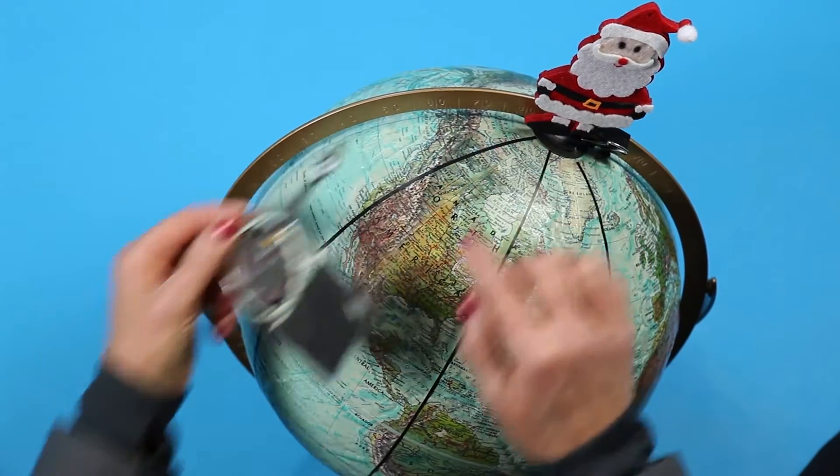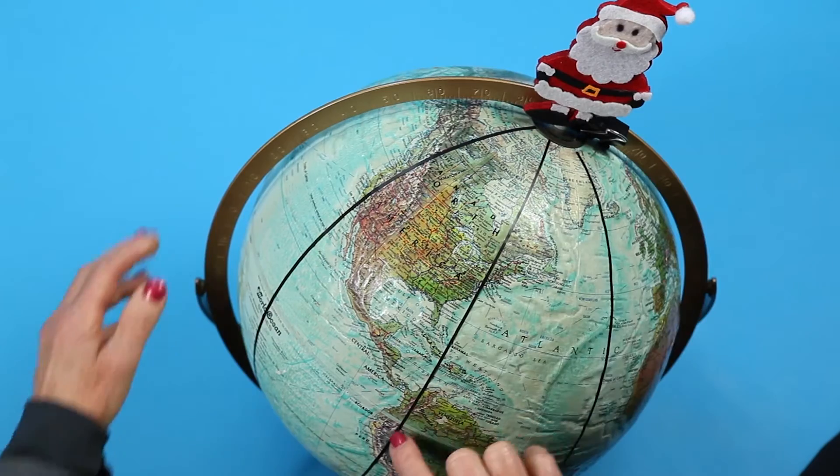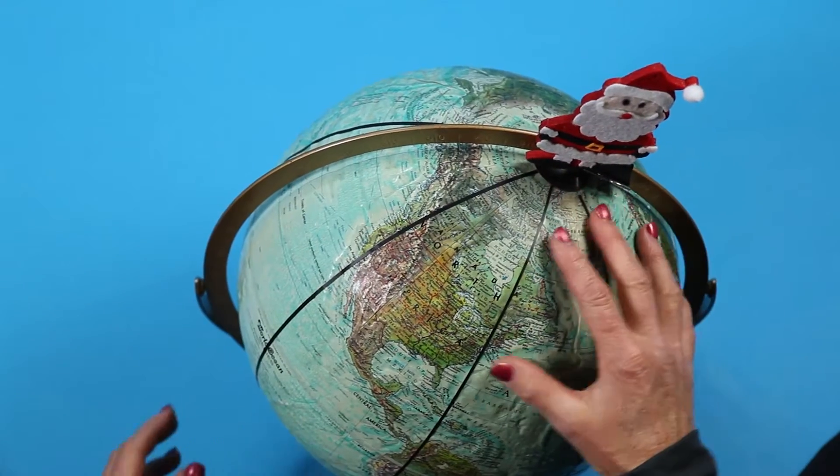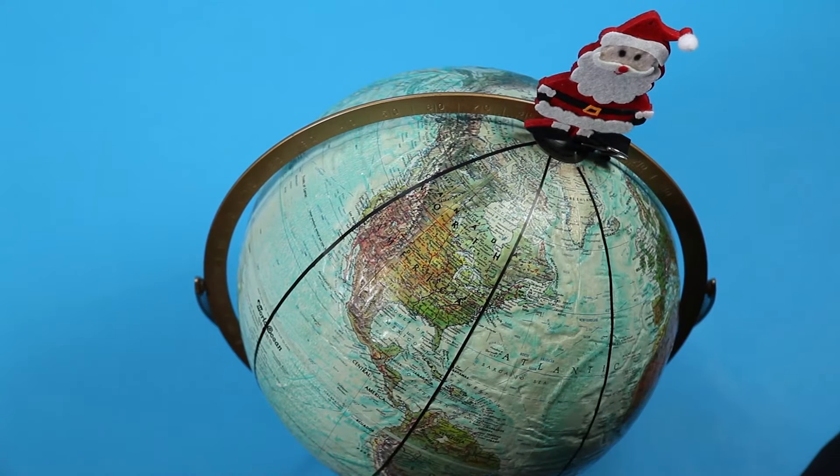North is the direction towards the geographic North Pole, the farthest point North on Earth. South Pole, North Pole, Santa. This direction is what we're talking about when we say North, and it's also called true North.